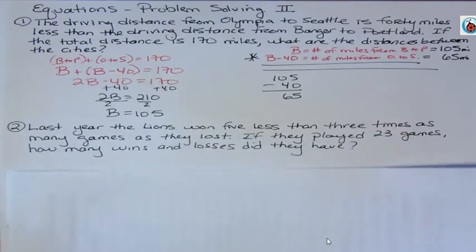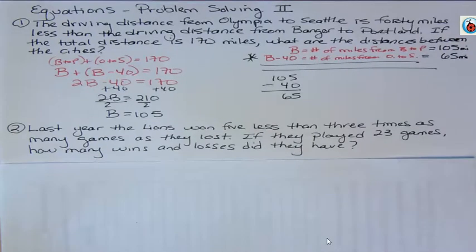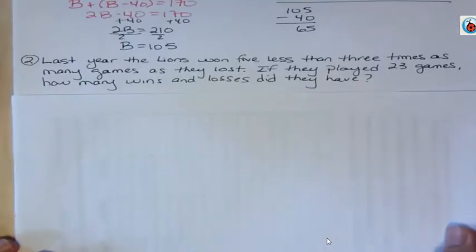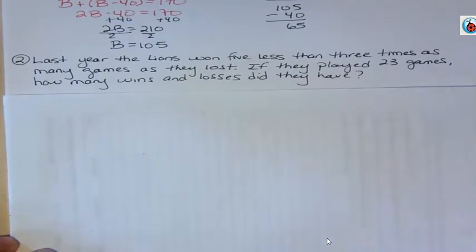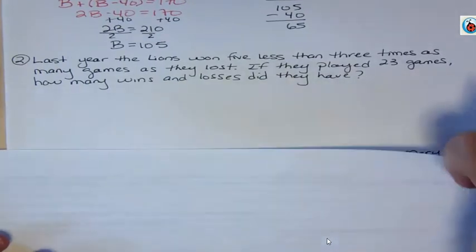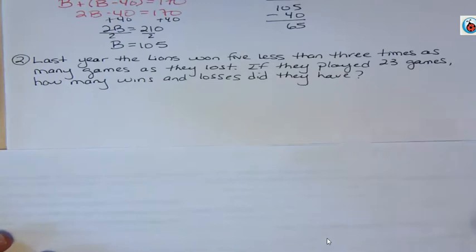Let's do the second one. Last year, the Lions won five less than three times as many games as they lost. If they played 23 games, how many wins and losses did they have? I wanted to use this one because some of the ones you see aren't quite as complicated as this, but if you do a harder one with me, then you can do the easier ones by yourself, right?